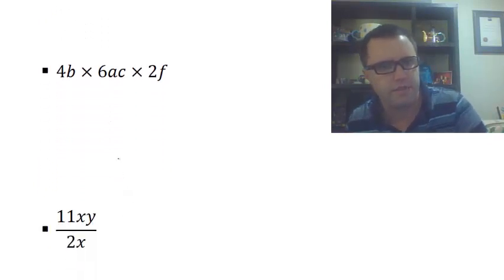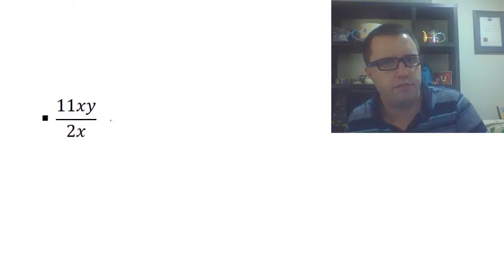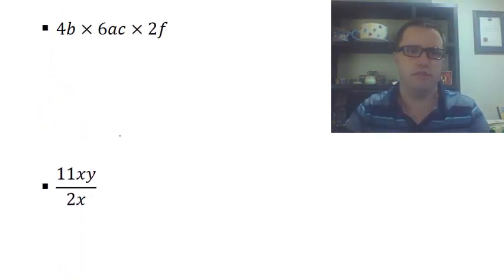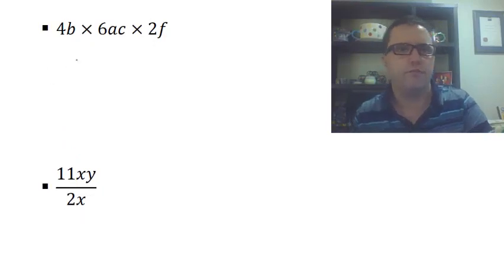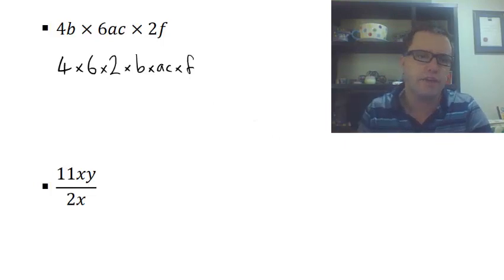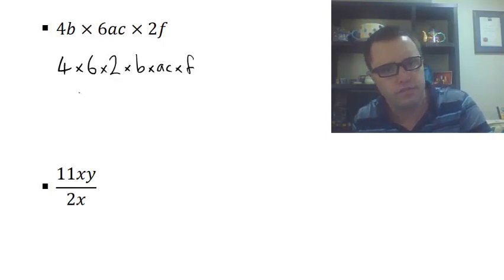Next one: 4b times 6ac times 2f. We're going to multiply all our numbers together. Let's rearrange them first. So 4 times 6 times 2, then times b times ac times f. Now we can get rid of all our multiplication signs.